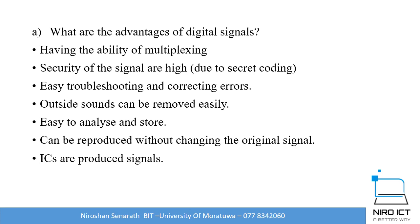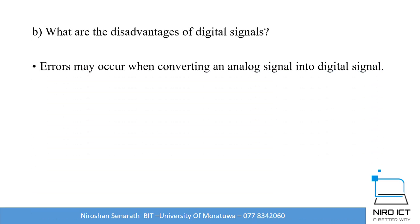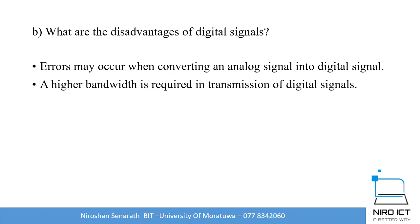We have many advantages, but we also have a few disadvantages. A significant disadvantage is that converting an analog signal into a digital signal is a difficult task, and many errors can occur during that conversion. Another disadvantage is bandwidth — bandwidth relates to the speed of data transmission, and if you use digital signals, you need a higher bandwidth compared to analog signals.